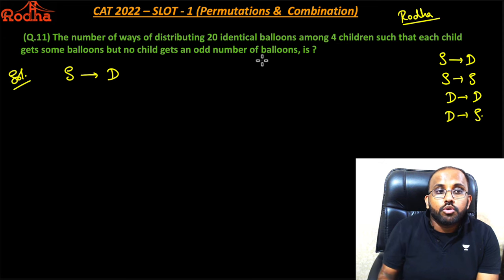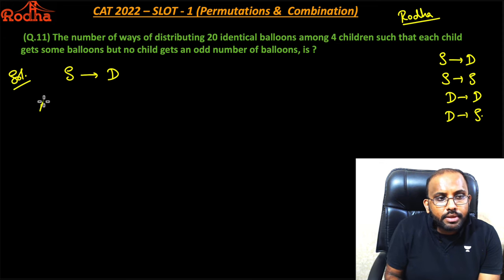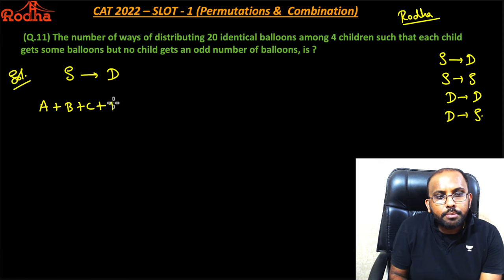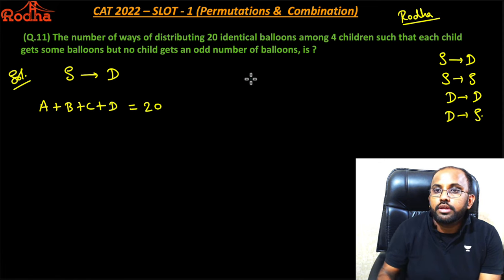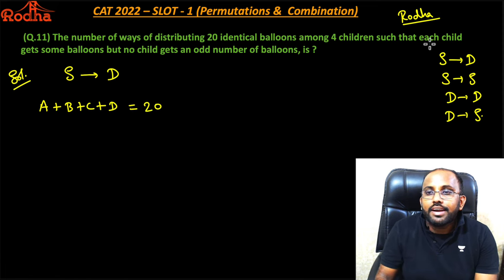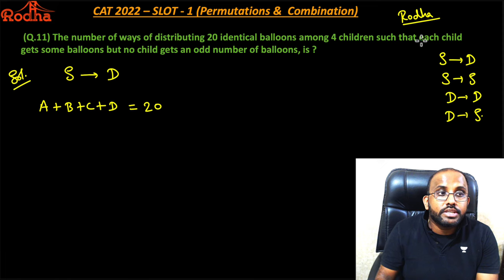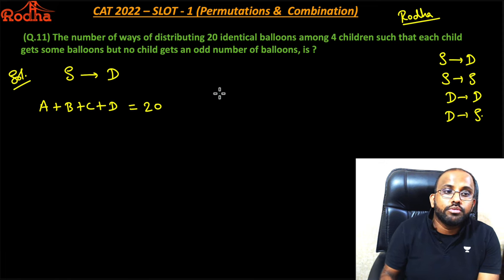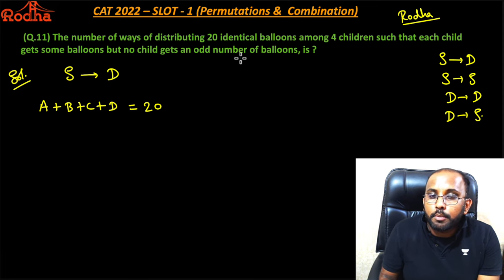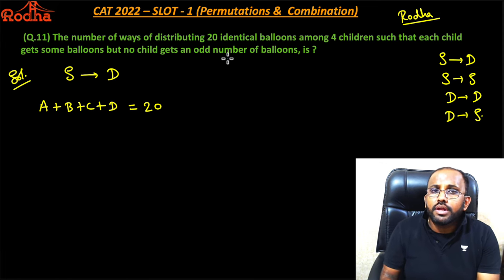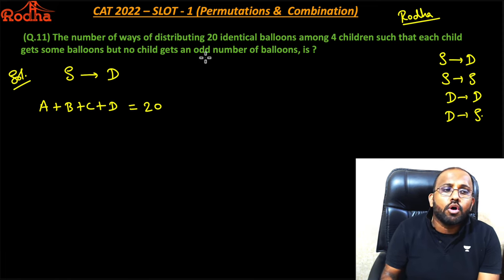Let's say the four children are A, B, C, D. We are distributing 20 balloons among A, B, C, D such that each child gets some balloons, but no child gets an odd number — meaning all are getting even numbers of balloons.